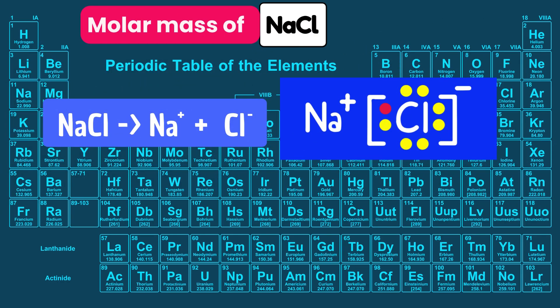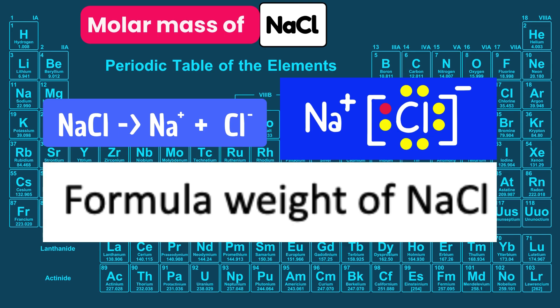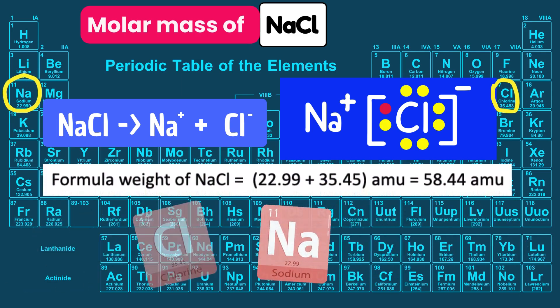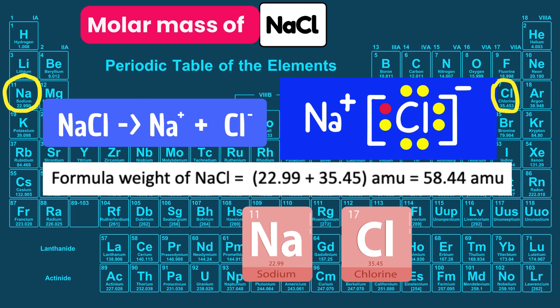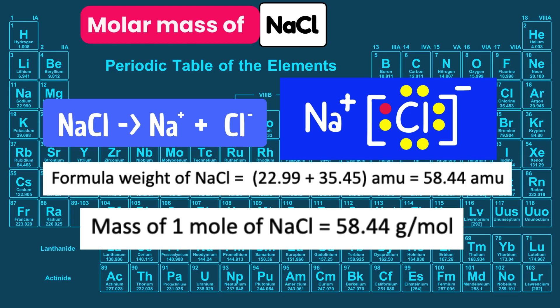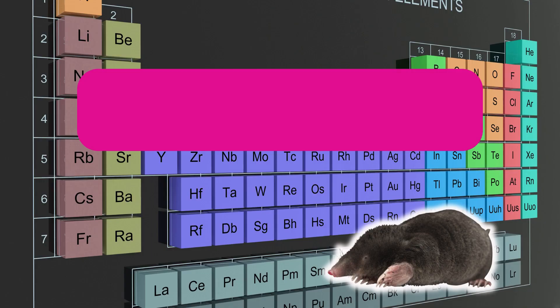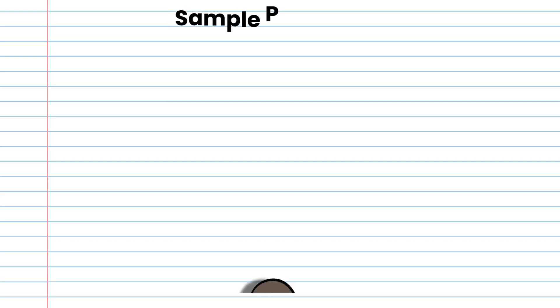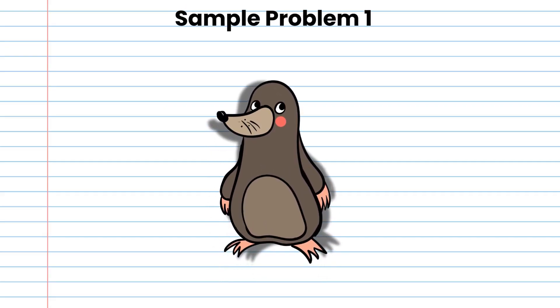Molar mass of NaCl: NaCl is an ionic compound with ionic bonds, and it exists as Na⁺ and Cl⁻ ions. Instead of molecular weight we call it formula weight, because NaCl exists as ions and not as molecules. The formula weight of NaCl is 22.99 plus 35.45 amu, which equals 58.44 amu. So the molar mass of NaCl equals 58.44 grams per mole.